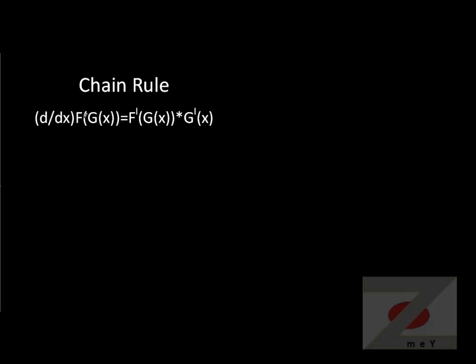Chain rule is basically a function within a function. How it works: you take derivative of outer, inner plugged, times derivative of inner. I'll explain more in a second. Let's take a couple functions: f(x) equals x cubed, and g(x) equals x squared plus 2.